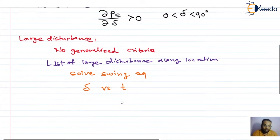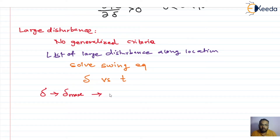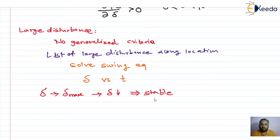From the swing curve, if the rotor angle delta, after attaining a maximum value, starts decreasing, then we can assume the system will be stable for large disturbances — that is, the system has transient stability. If, however, after attaining the maximum value the rotor angle does not decrease, and the rate of change of the rotor angle is continuously increasing, then the system will not be stable — it will not have transient stability.